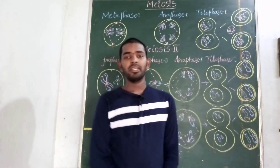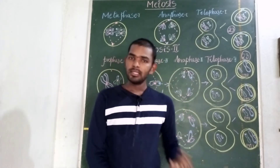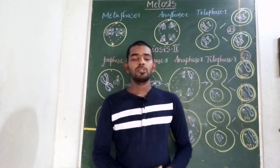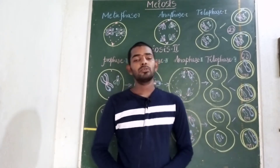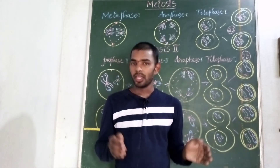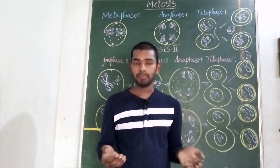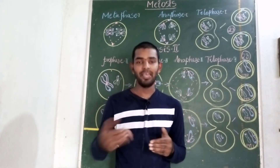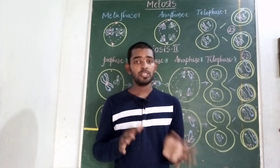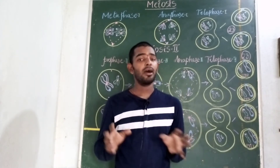The five sub-stages are leptotene, zygotene, pachytene, diplotene, and diakinesis. In leptotene, a thin thread-like chromatin will form. In zygotene, a pair of chromosomes come together to form a synapse — the homologous chromosomes or bivalent — and the synaptonemal complex will form. In pachytene, crossing over takes place, and the points of crossing over are called chiasmata.